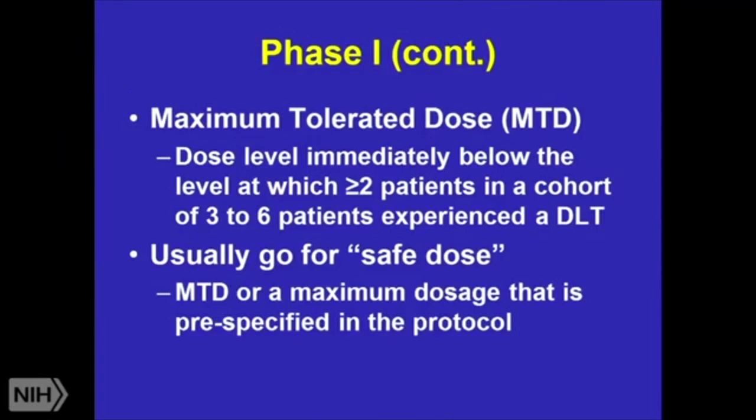The old way: enroll three patients. If zero out of three have dose limiting toxicities, escalate to the new dose. If one out of three has a DLT, expand the cohort to six — add three more people, because maybe it was a fluke and may not be related to the drug. We would escalate if zero of the next three new patients develop that DLT — meaning only one out of six at a given dose developed a DLT. The idea is you're working your way to what's called a maximum tolerated dose, or MTD: the dose level immediately below the level at which two or more patients in a cohort of three or six experience the dose limiting toxicity.